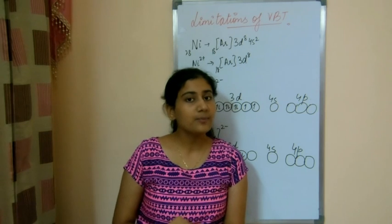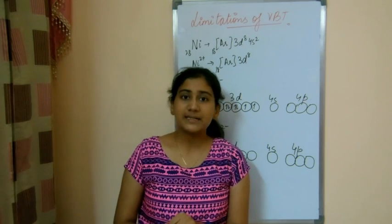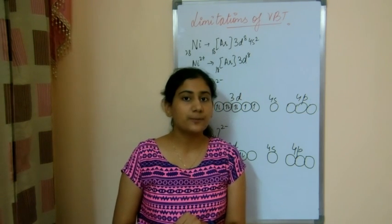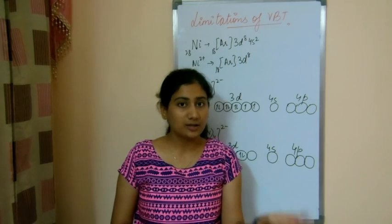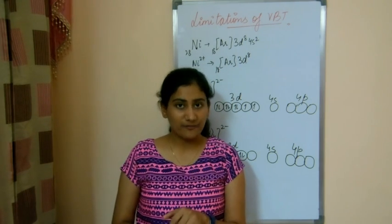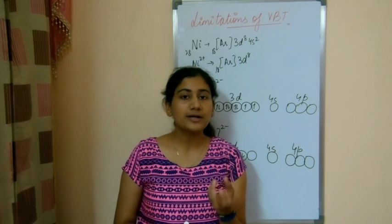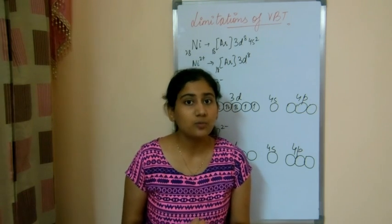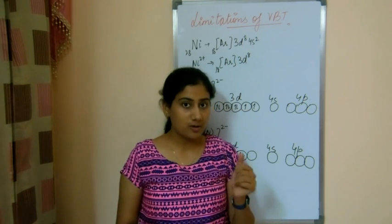It calculated the number of unpaired electrons, but still there was a difference between the magnetic moment which was calculated and measured. This was the drawback of valence bond theory which could not explain why magnetic moment varies with temperature in coordinate compounds.